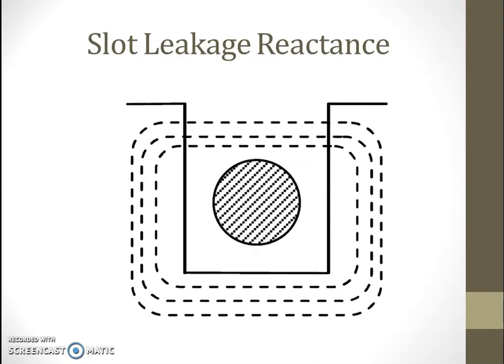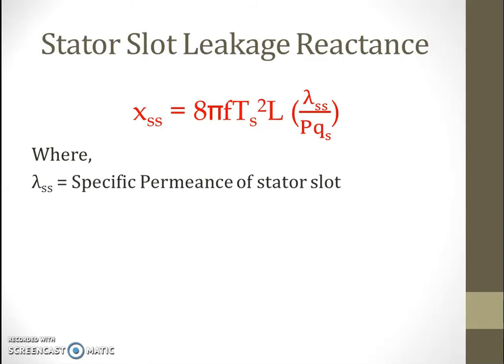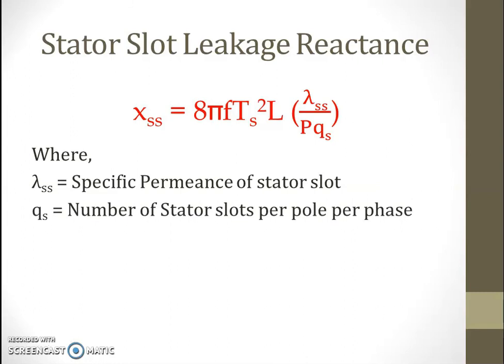We cannot completely eliminate leakage flux in a three-phase induction motor, so during design we must calculate these leakage fluxes appropriately and derive leakage reactance from them. Starting with slot leakage reactance: stator slot leakage reactance Xss is given by 8·pi·f·Ts²·L·lambda_ss / (p·qs), where f is frequency, Ts is stator turns per phase, L is stator core length, lambda_ss is specific permeance of stator slot, and qs is number of stator slots per pole per phase.